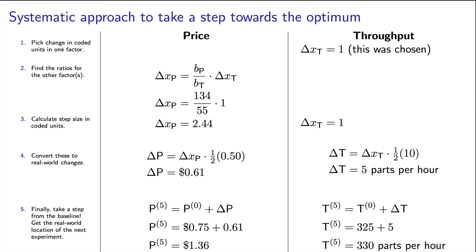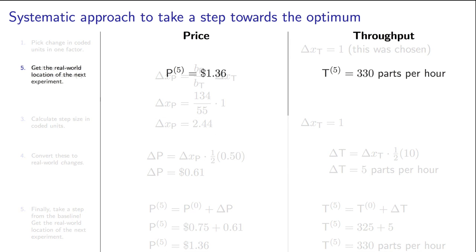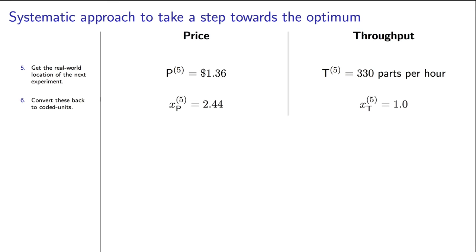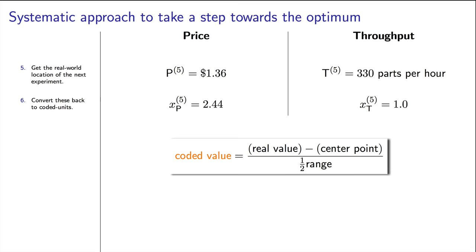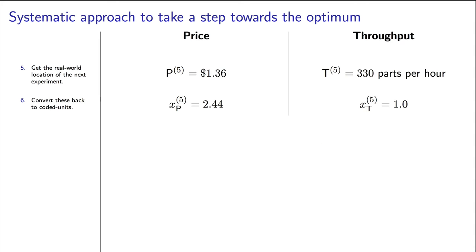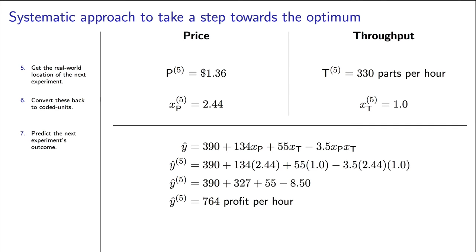So that's my fifth experiment, over here, with a throughput of 330 parts per hour and a price of $1.36. Notice how this is a greater change in price than the changes in throughput. And that's exactly correct in what we saw in the model. What are the corresponding Xt and XP values for these encoded units? Using the formula from before, that corresponds to Xt equals 1 and XP equals 2.44. It's always good practice before we run the experiment to predict what the outcome is going to be. Using those coded values, we can see that it's 390 from the baseline and another $327 increase due to the price, plus $55 increase due to the throughput change. Finally, there's a small interaction that reduces profit by $50, so the total prediction here is $764.